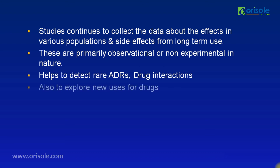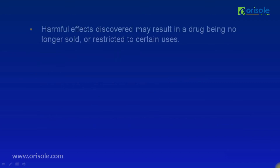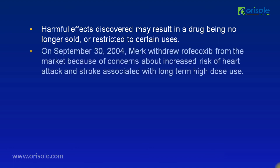Phase 4 is also used to explore new uses for drugs. Periodic safety update reports are identified in phase 4, and these reports must be submitted by the manufacturer every six months for two years, then annually for the next two years after marketing and approval. Harmful effects discovered may result in a drug being no longer sold or restricted. For example, on September 30, 2004, Merck withdrew Rofecoxib (Vioxx) from the market due to concerns about increased risk of heart attack and stroke associated with long-term, high-dose use.